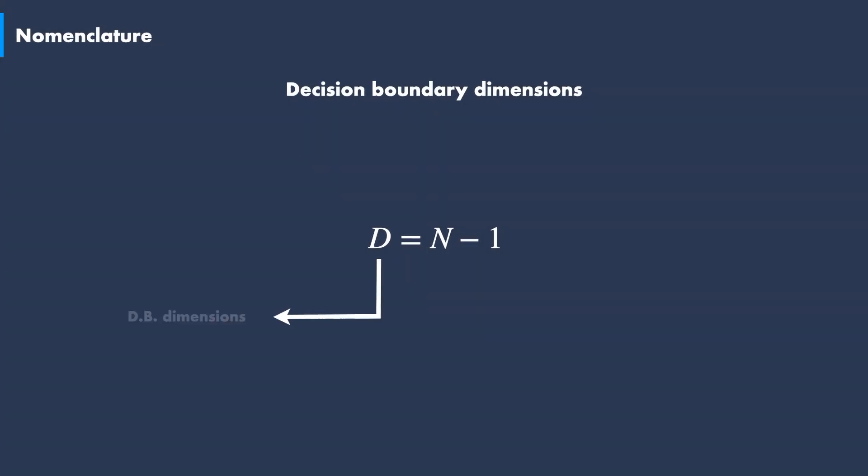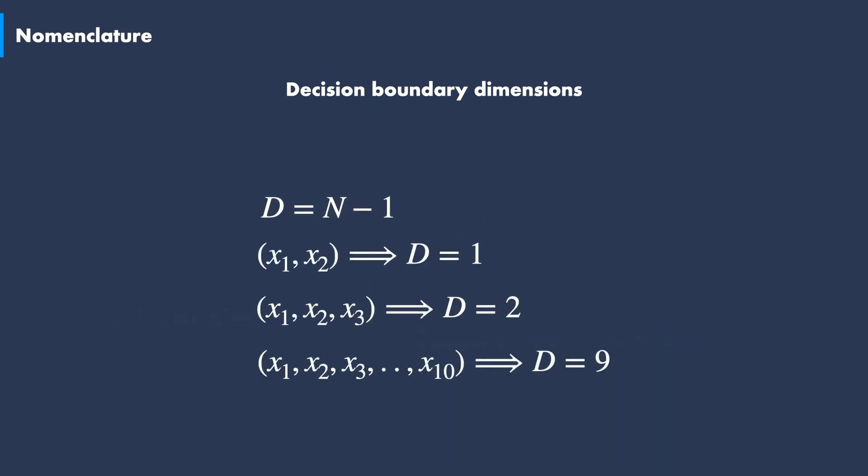The decision boundary dimensions labeled D is equal to N-1, where N is the number of input features. This means that if we have two inputs, such as the example of the housing market from the previous video, then the decision boundary must be a one-dimensional object, e.g. a straight line or a curve of some shape. Three input features will result in a two-dimensional decision boundary, ten input features will result in a nine-dimensional decision boundary, and so on.